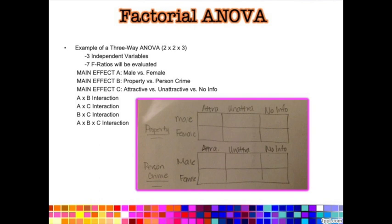When you do these formulas you'll end up with three F ratios, one for each main effect and the interaction. This is different from a one-way ANOVA where you only evaluated one F for significance. Here you'll have to do three total F ratio evaluations. But if you add another IV you actually increase the number of F ratios you have to evaluate by a lot.